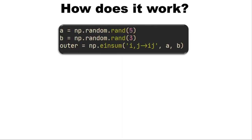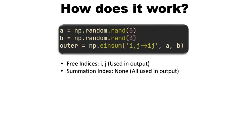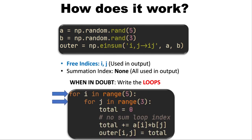Let's take a look at another example where we have defined two vectors A and B and we're doing einsum with I, then J, then the output IJ. This can feel tricky to understand. First of all, we have the free indices I and J, and then we have no summation index because all are used in the output. When in doubt, write out the nested loops. We will have outer loops I and J. After that, we initialize variable total. In this case we won't have a summation loop, so we just do total plus equals AI element-wise multiplied by BJ. Then we set the output IJ equal to that total. This operation is called the outer product.